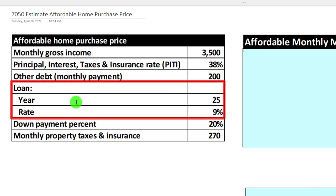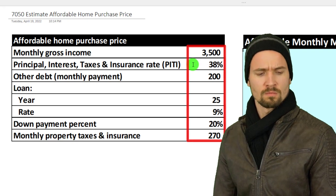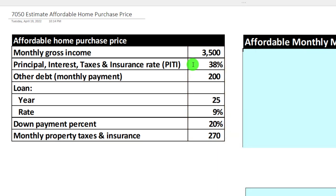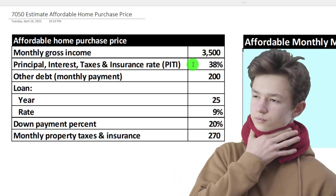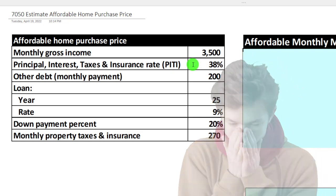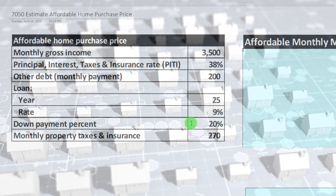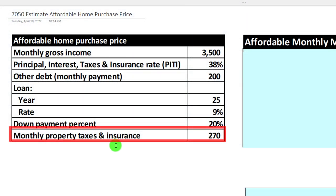We've got the loan — it's going to be a 25-year loan at 9%, and the down payment percent is 20%. When we purchase a home, you have to put 20% down. Like the rate, these figures will be dependent on the current situation — they might be somewhat standardized as of a point in time for standardized loan types like a 30-year fixed. Monthly property taxes and insurance we're going to say is $270.